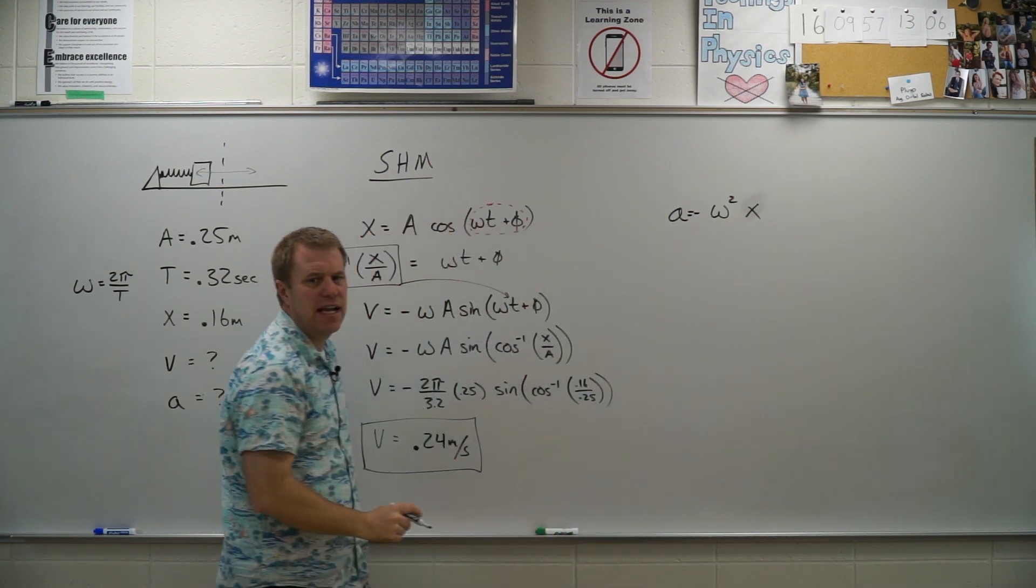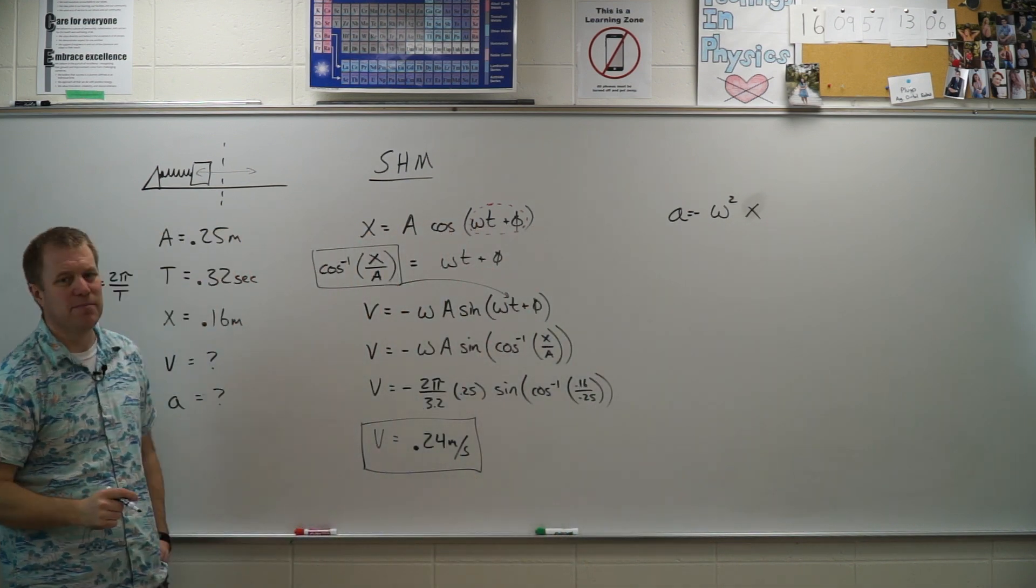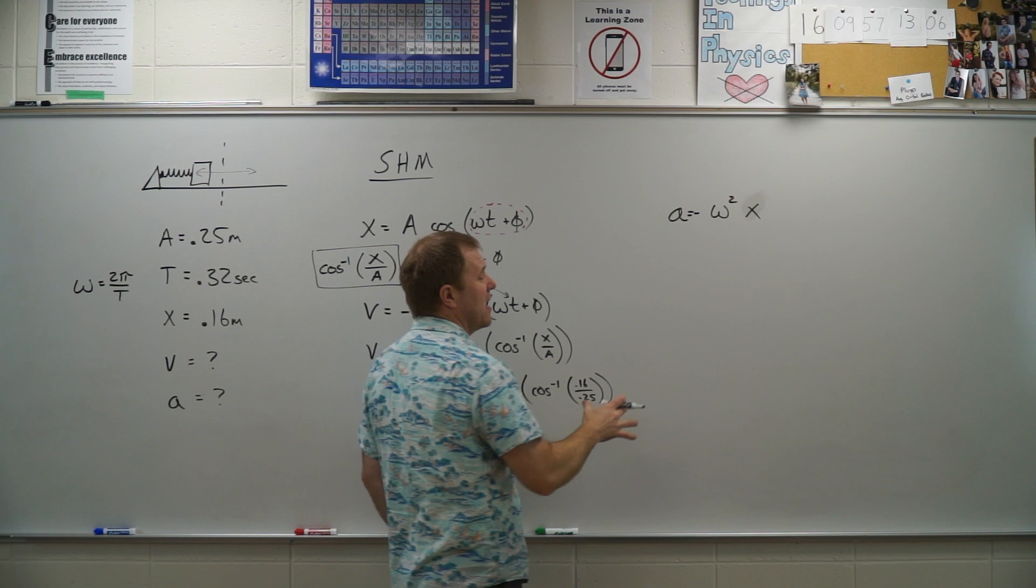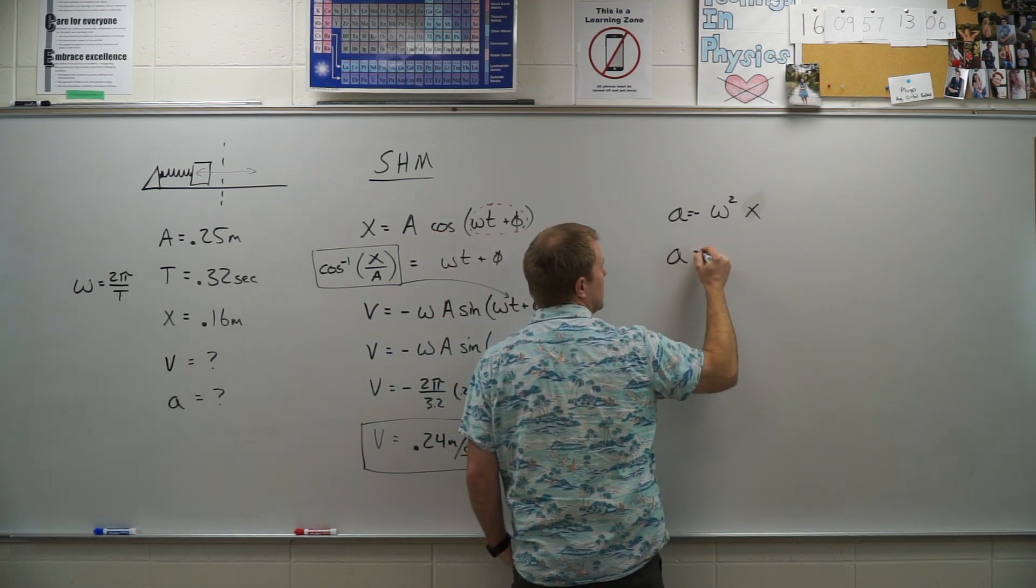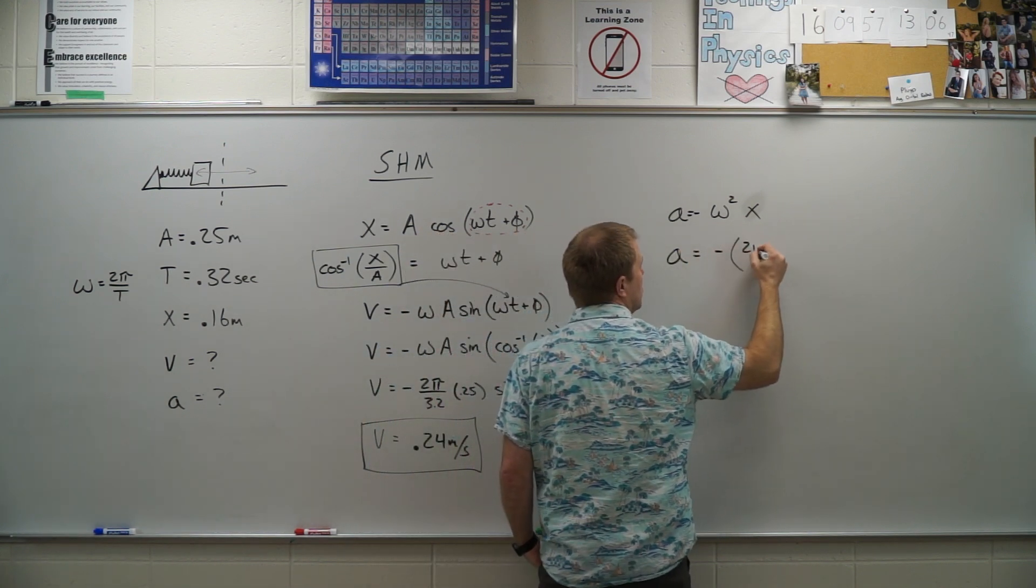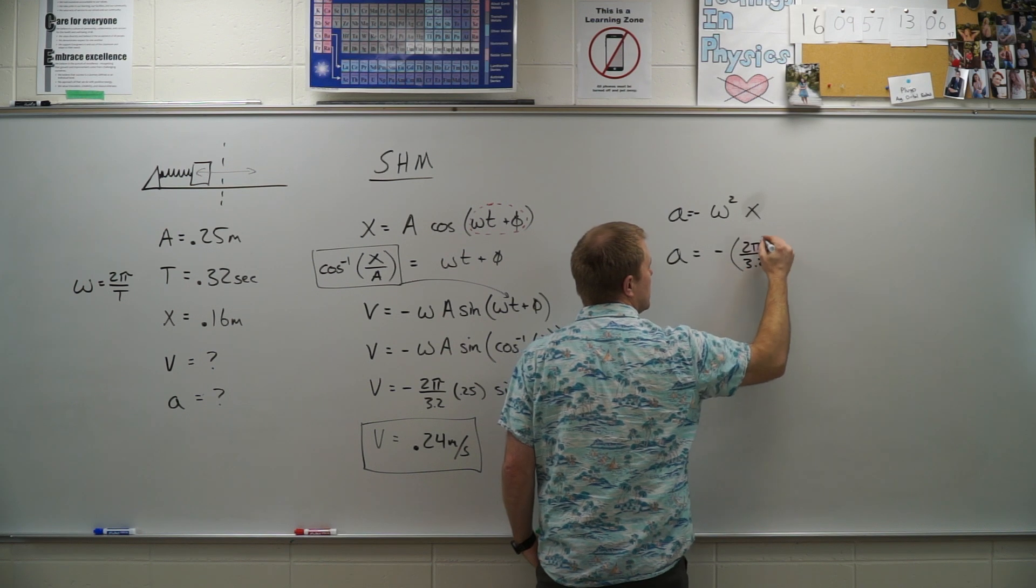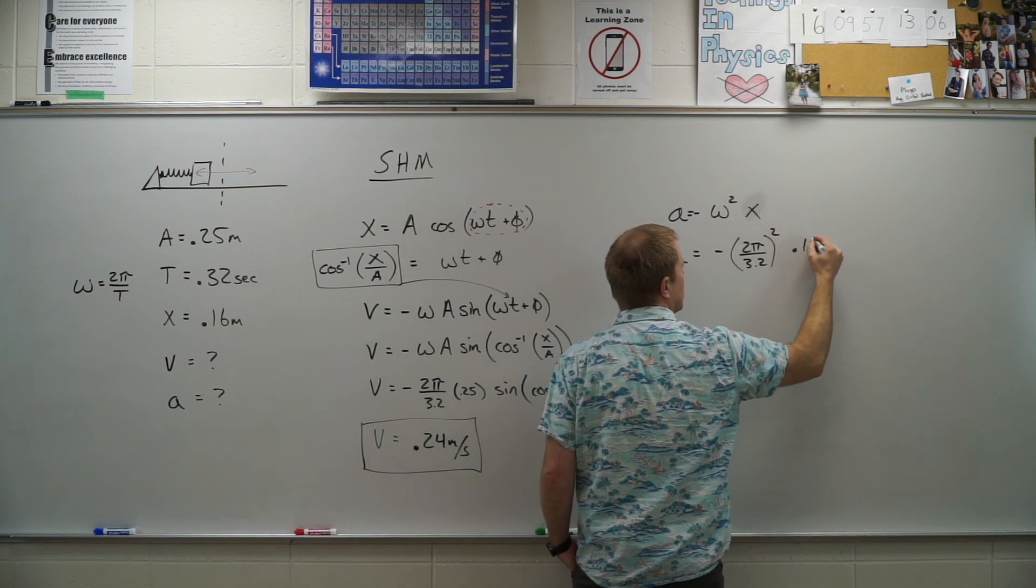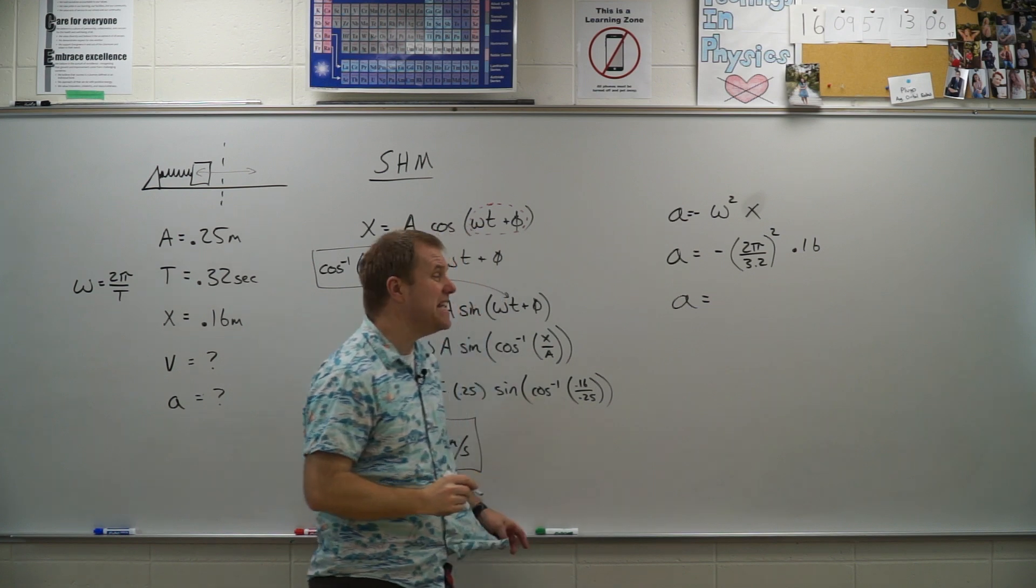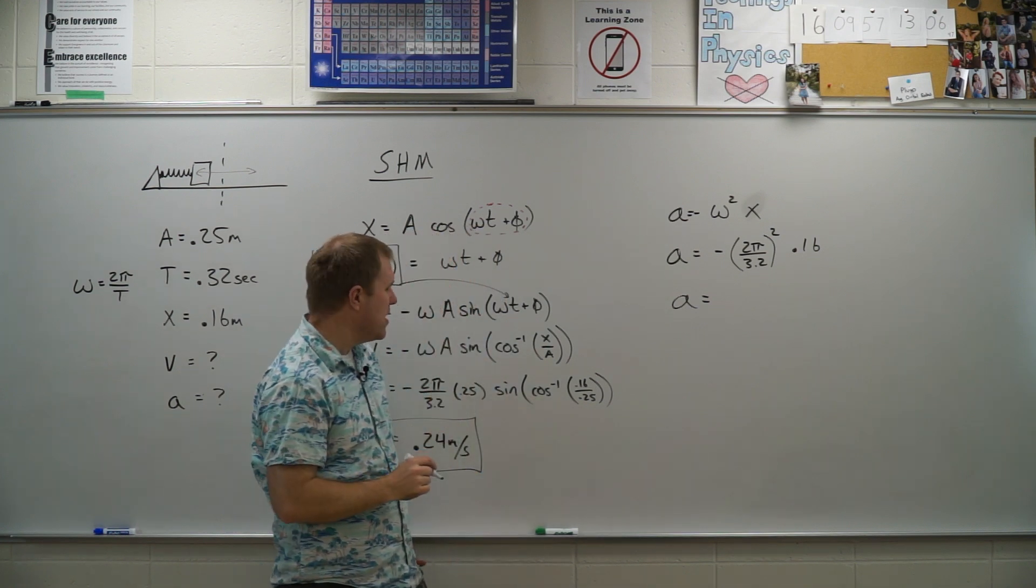So at any place, it's going to be omega squared times x. Well, the nice thing is I kind of know these two pieces of information. So negative of 2 pi divided by 3.2 quantity squared times my 0.16 will give me the acceleration, a much easier calculation over here.